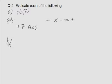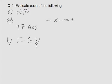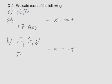Now look at option B: 5 minus into minus 3. Here, minus multiplied by minus gives a plus sign. So the question becomes 5 plus 3, which equals 8. So 8 is your answer.